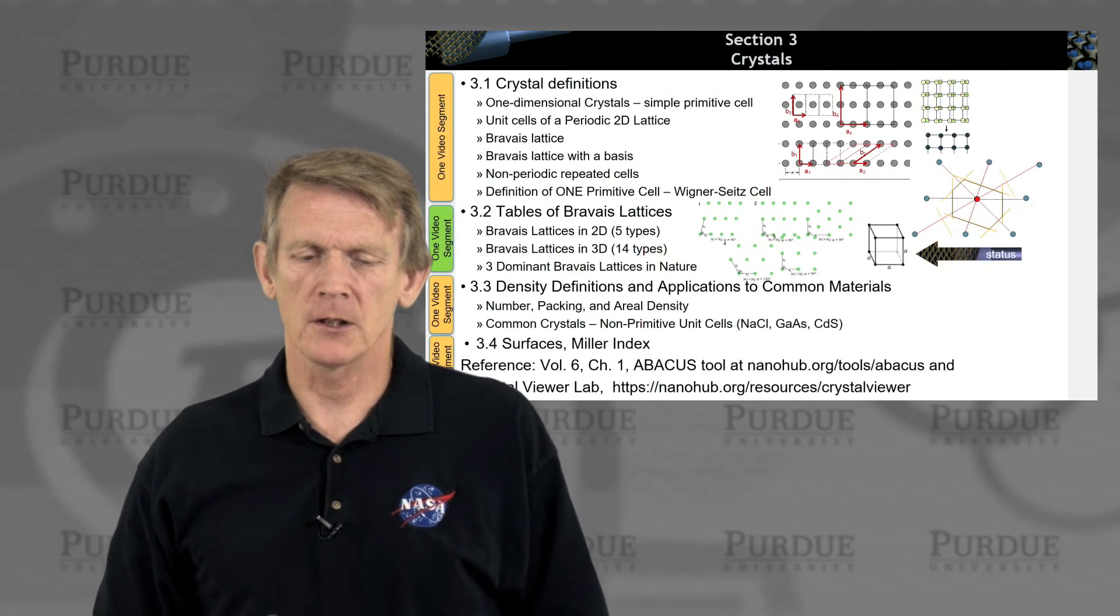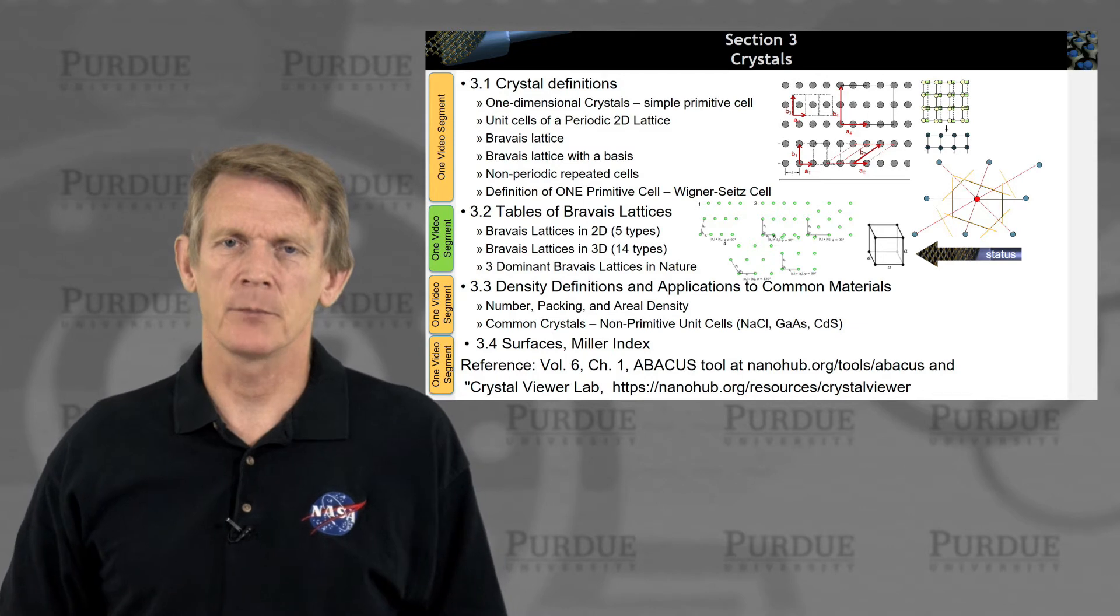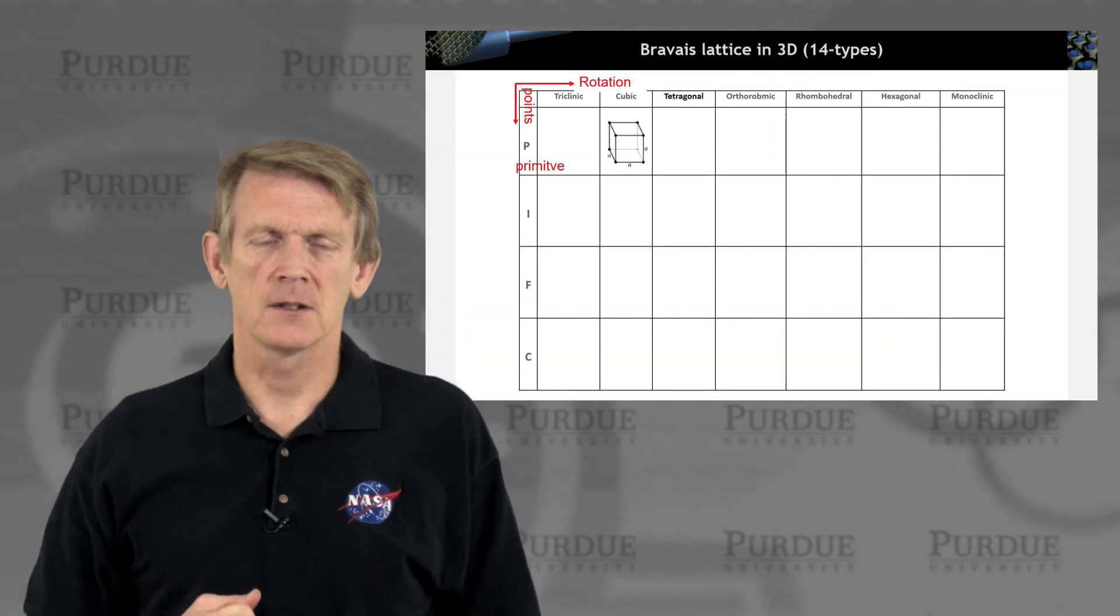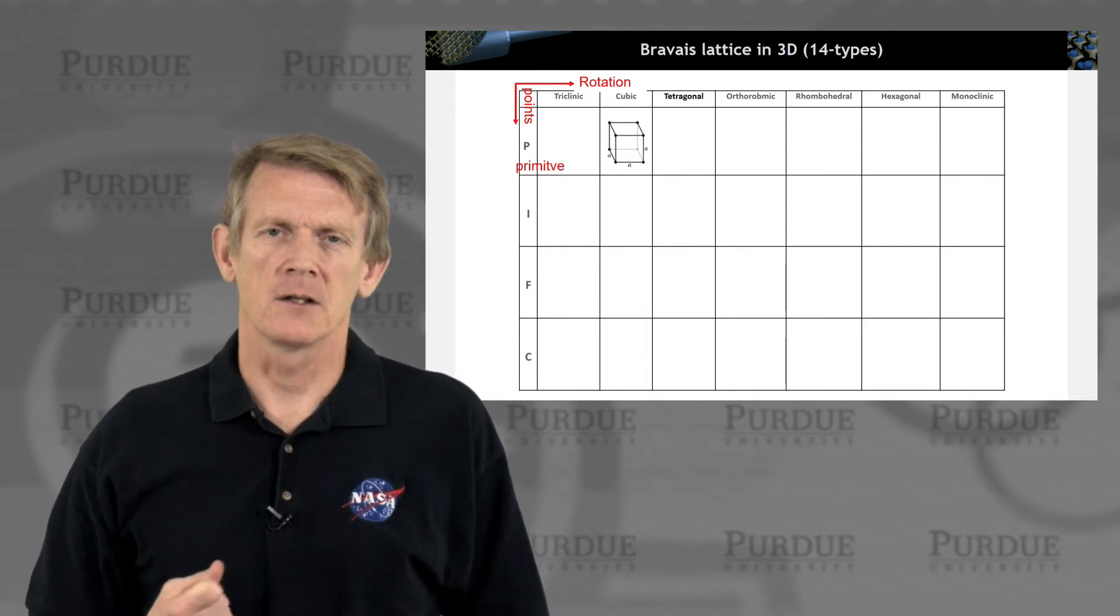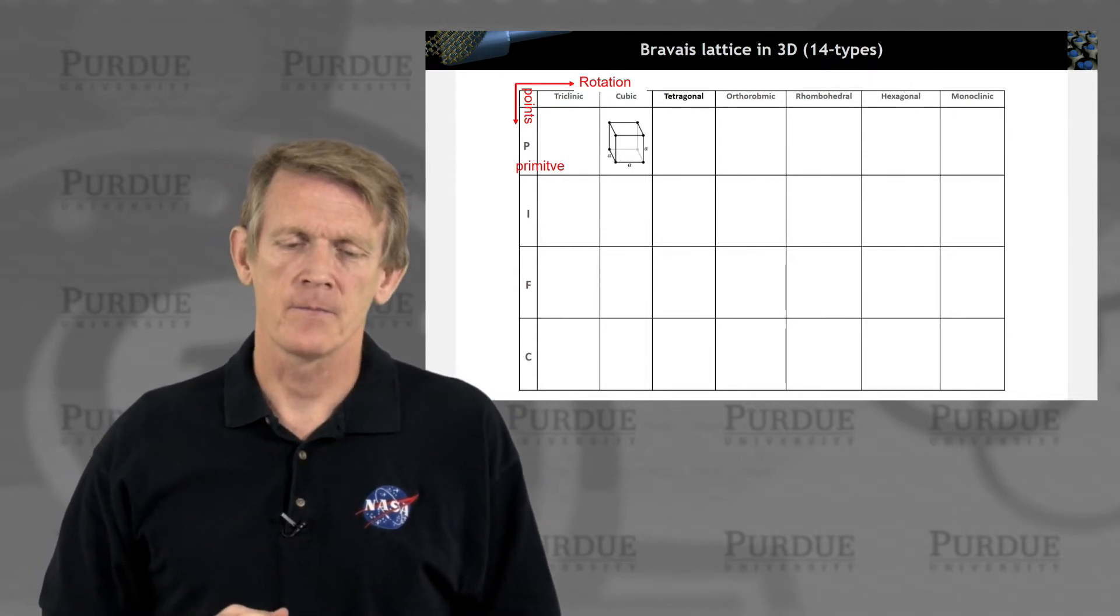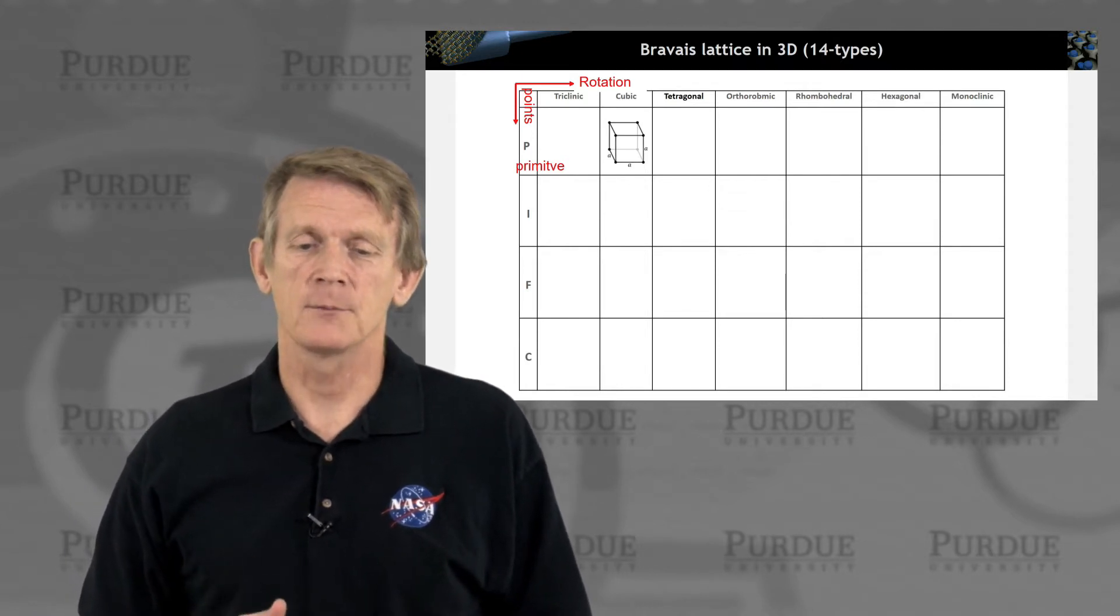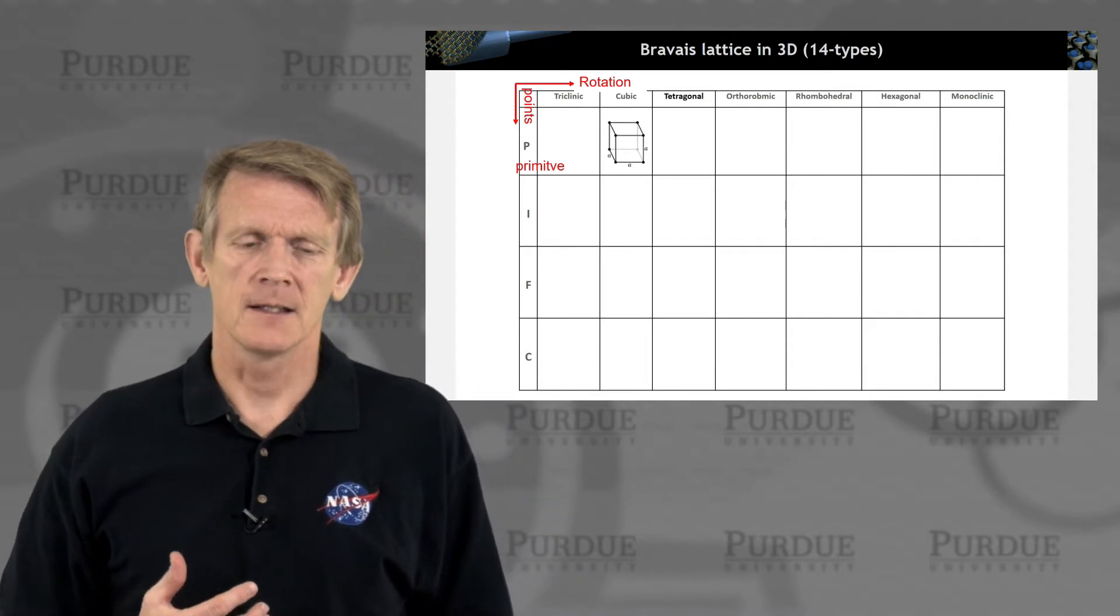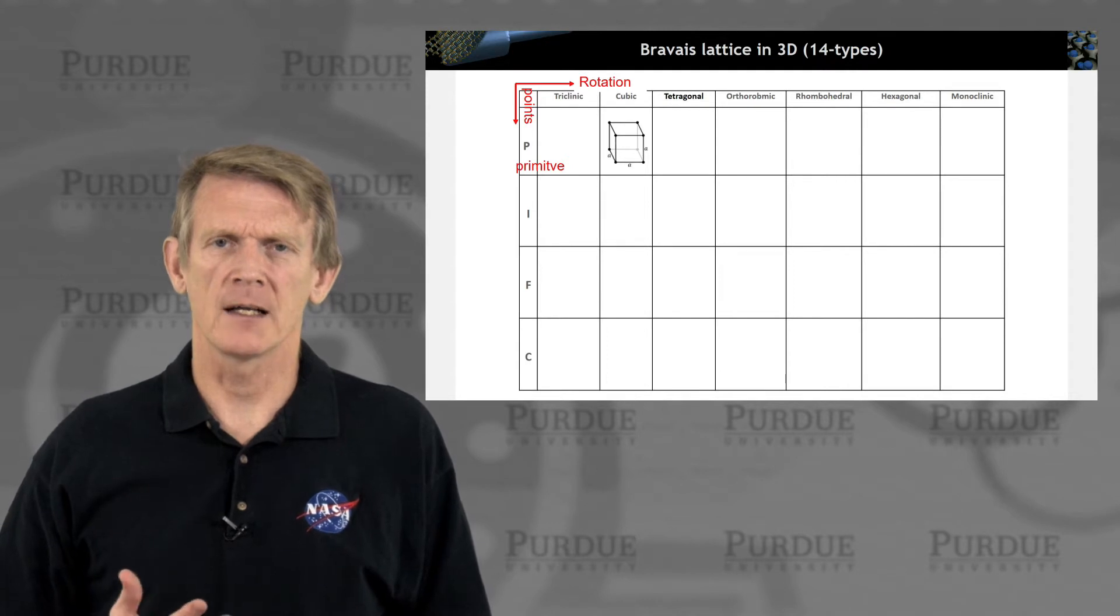And now we're going to go into 3D, and of course we'll start with a simple cube. The simple cube has 90 degrees between the three different basis vectors, and all the basis vectors have the same length. Now in 3D, there is 14 types of Bravais lattices, and they can be arranged in a form that deal with rotational symmetry and that deal with number of atoms per cell.